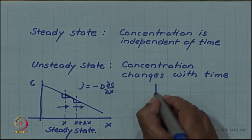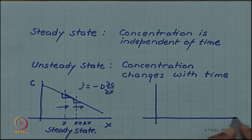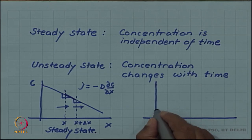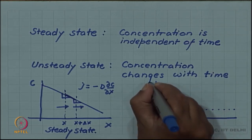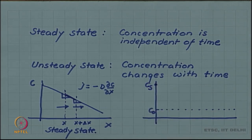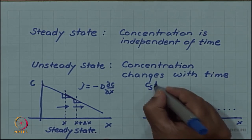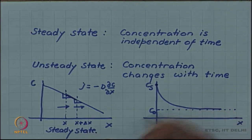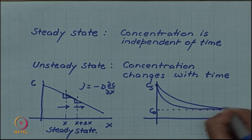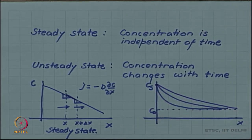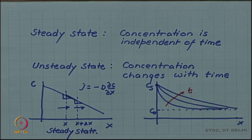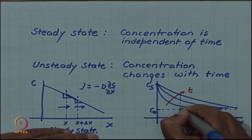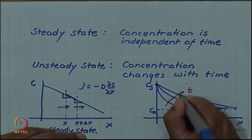If we take another example like carburization, where the initial concentration C naught was very low, but we obtained a surface concentration C_s due to exposure to the carburizing atmosphere, which was much higher than C naught — then carbon starts entering into the material, and as a function of time the concentration profile is evolving. So at any given position, the concentration increases with time.